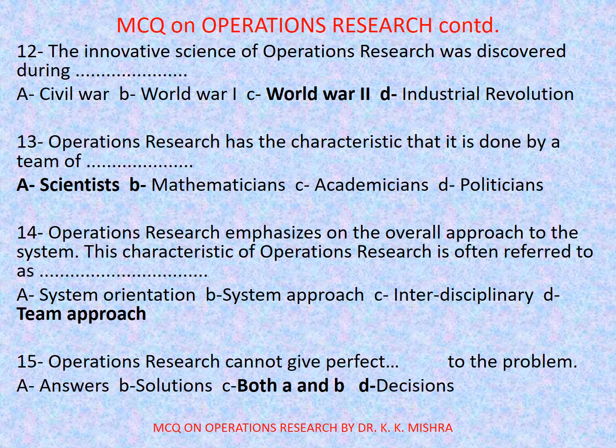Question number 13: Operations research has the characteristic that it is done by a team of dash — options are: A. Scientists, B. Mathematicians, C. Academicians, D. Politicians. Correct option is A: Scientists. Question number 14: Operations research emphasizes on the overall approach to the system; this characteristic of operations research is often referred to as dash — options are: A. Systems orientation, B. System approach, C. Interdisciplinary, D. Team approach.